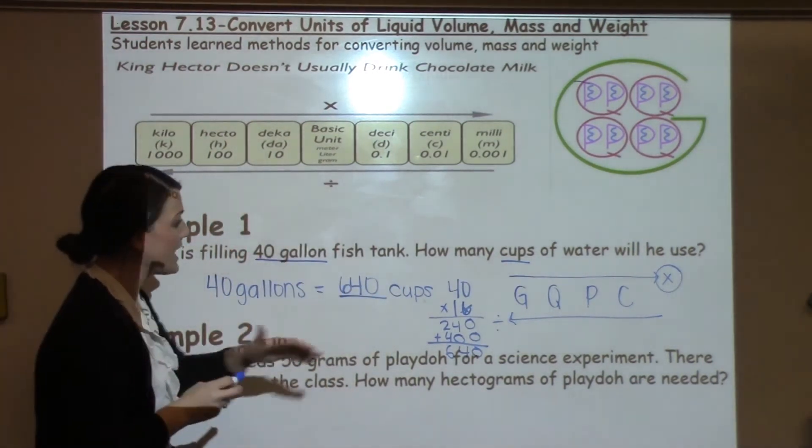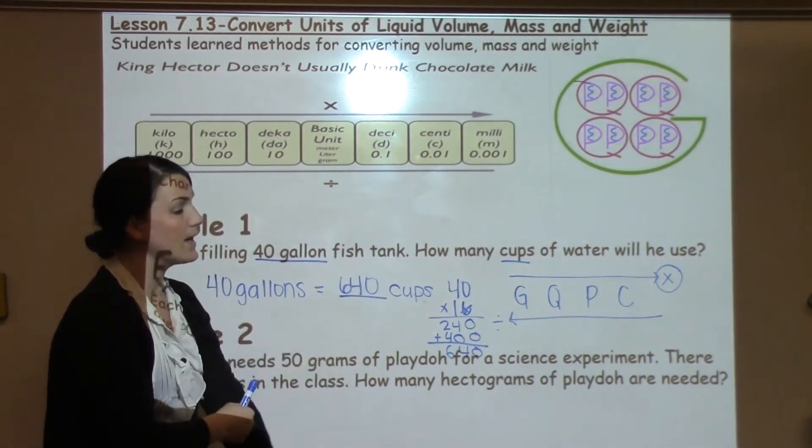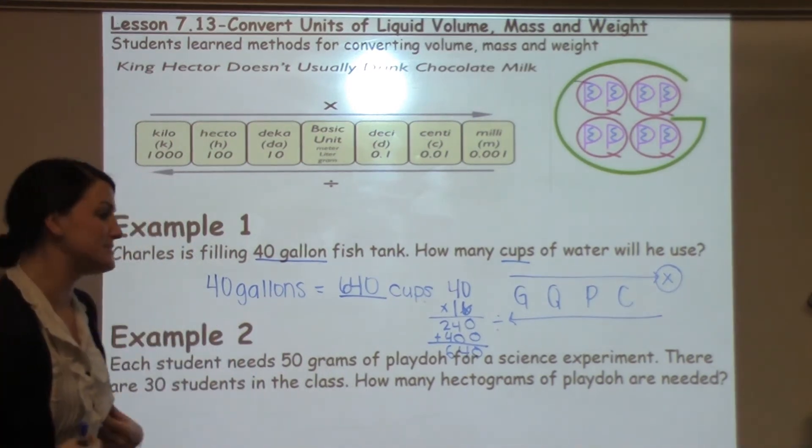When I add these amounts, I'm going to get the answer of 640 cups. So using both of the helpers there, I was able to take what I have, 40 gallons, and figure out what I need, how many cups it was.